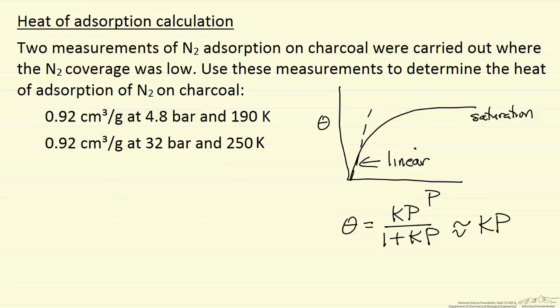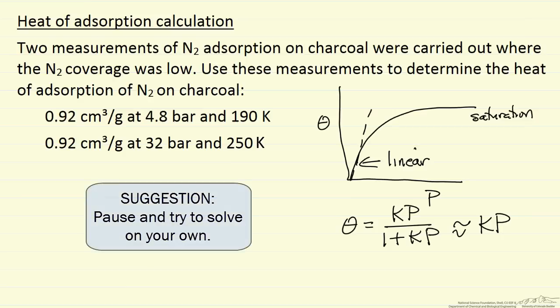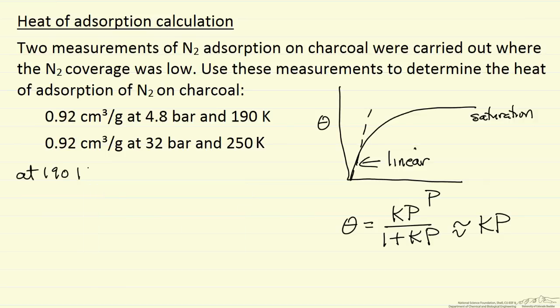And then we can calculate k at the two conditions. At 190 Kelvin, we don't know the actual fractional coverage. We just know how much is adsorbed. So how much is adsorbed divided by the saturation coverage would give us the fractional coverage. So we're saying it's proportional to the fractional coverage. So I'm just going to use alpha as the proportionality constant times 0.92. This is going to be equal to our adsorption equilibrium constant times the pressure. And of course, the same thing at 250 Kelvin.